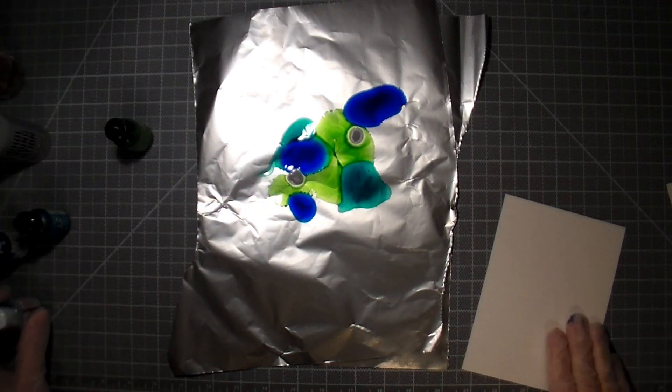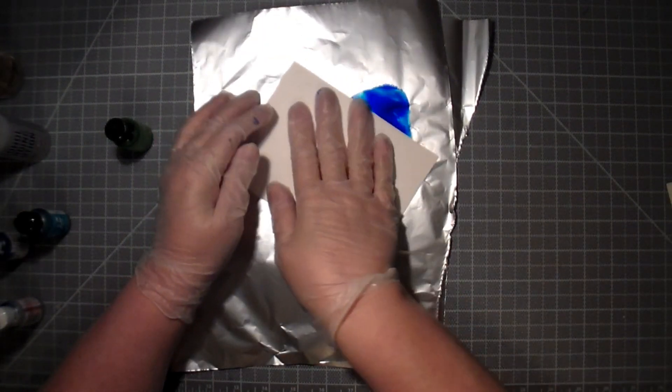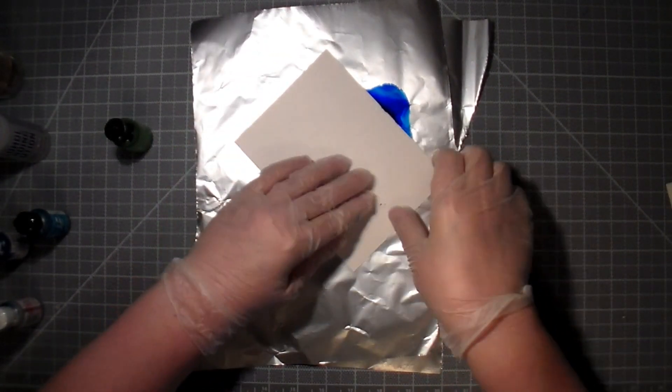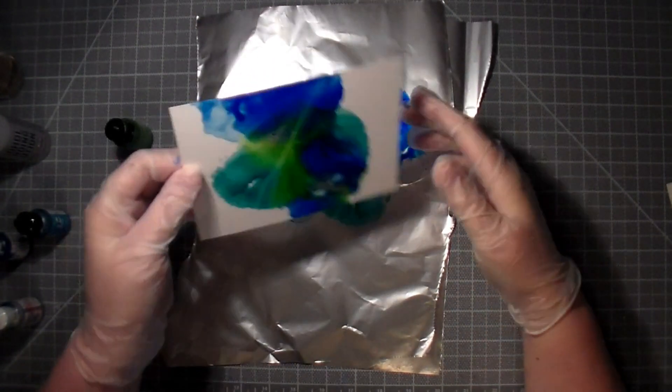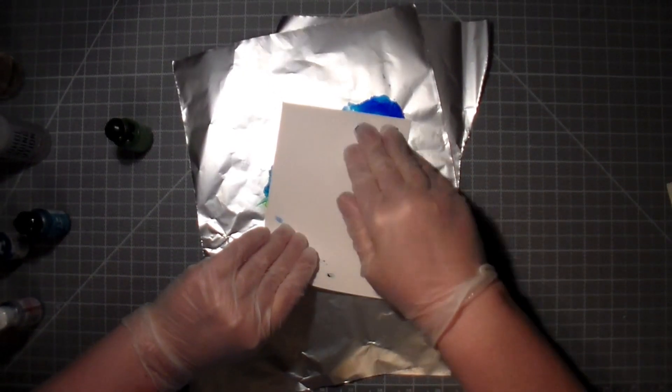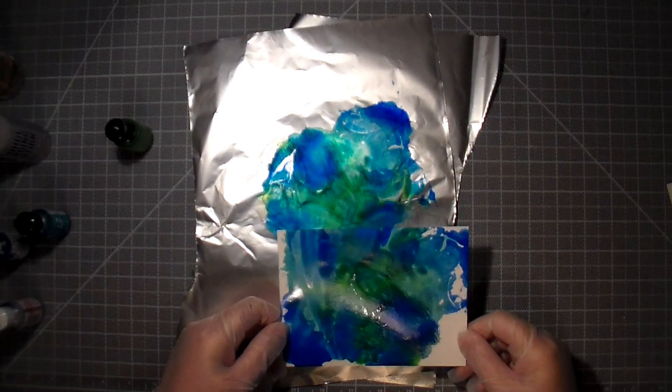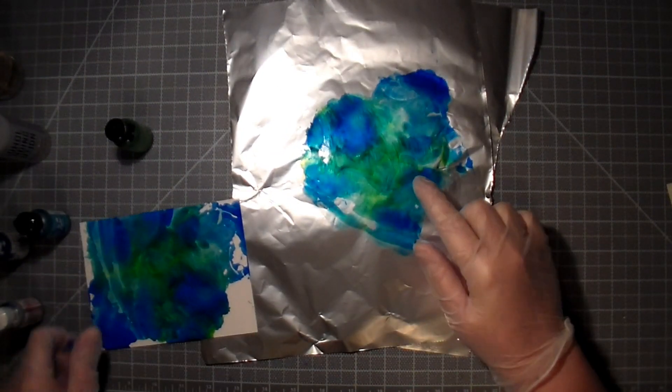Now I'm going to take the Yupo paper and I'm just going to press it down into the ink, give a little bit of a twist and pat it into the ink, and then I'm going to pull it up. I'll see where there's some blank spots and dip it down and press into the ink again. Now you can see that the ink is already drying. It dries really fast on the foil, so you have to be quick with this technique.